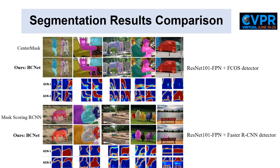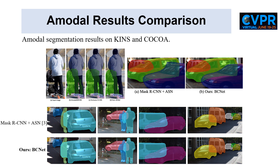We show qualitative comparisons of CenterMask, Mask-Scoring RCNN, and BCNET on images with overlapping objects on the COCO dataset with different object detectors. For example, BCNET decouples the occluding and occluded baseball players in similar clothes into GCN1 and GCN2 respectively, and detects the left leg missed by CenterMask. We also show qualitative comparisons on KINs and COCOA respectively. In the first case in the bottom row, our BCNET infers a more reasonable amodal car shape even when the front part of the car is heavily occluded by the standing woman.